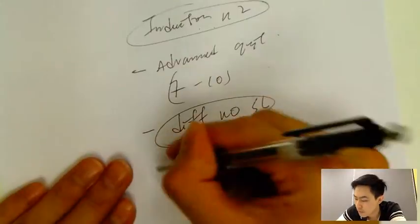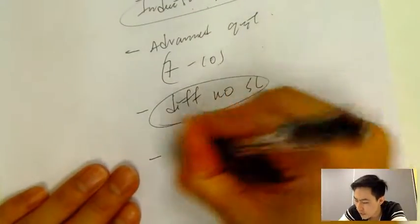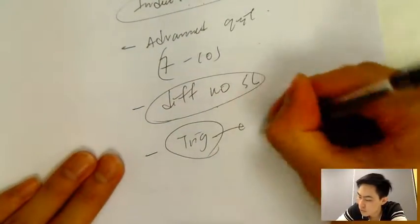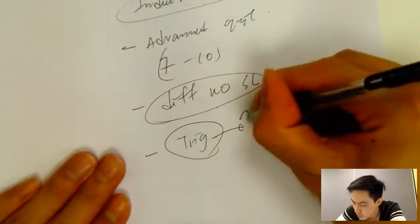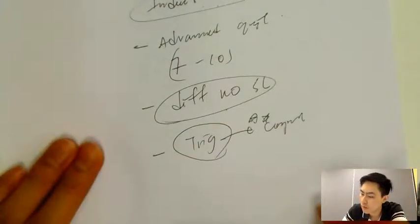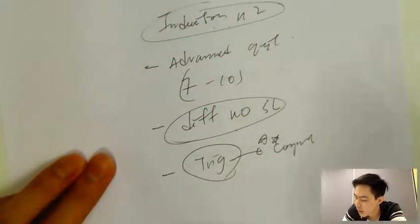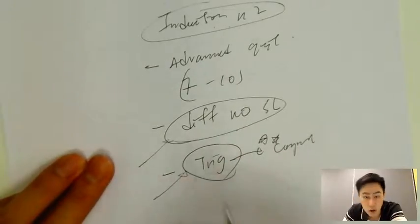And also one more thing - this one will combine with the trig. So that will be the compound angle, very important concept. So before you do this Note 2, you have to go through differentiation and also trig.